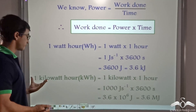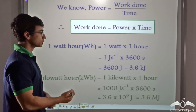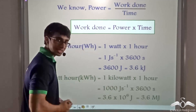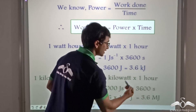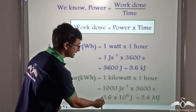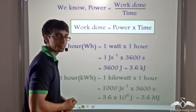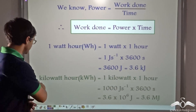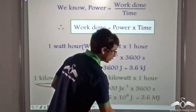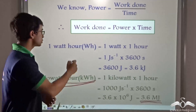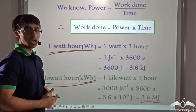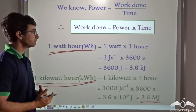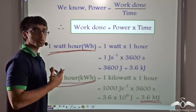Similarly, we find out what 1 kilowatt-hour is. We write 1 kilowatt into 1 hour: 1 kilowatt is 1000 joules per second, multiplied by 1 hour which is 3600 seconds, giving 3.6 × 10 to the power 6 joules, or in other words 3.6 megajoules. So 1 kilowatt-hour is equal to 3.6 megajoules. Watt-hour and kilowatt-hour are two other units through which work done or energy spent can be represented, and as you can see these are much larger units of energy.